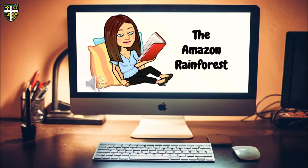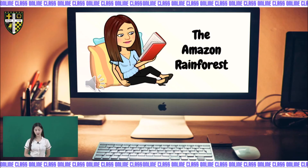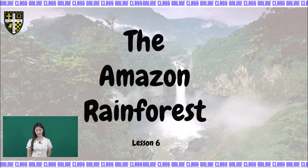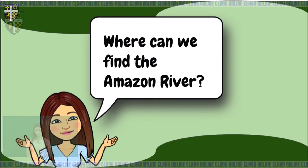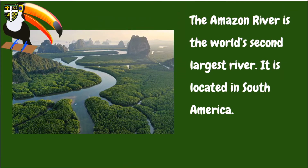So that is our passage today — it's all about the Amazon Rainforest. Where can we find the Amazon River? The Amazon River is the world's second largest river and it is located in South America. Remember that the Amazon River flows mostly in Brazil, but it goes through seven other countries too. And it is surrounded by an enormous rainforest — the Amazon Rainforest.